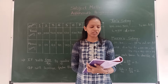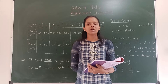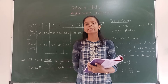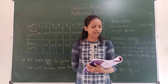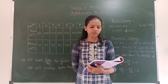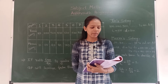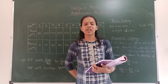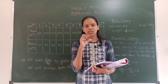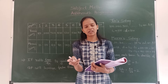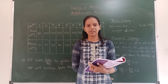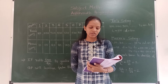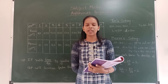He asked both teachers how much salary they wanted. Tara said: give me 100 gold coins in the first month, and every month increase the amount by 100 gold coins.